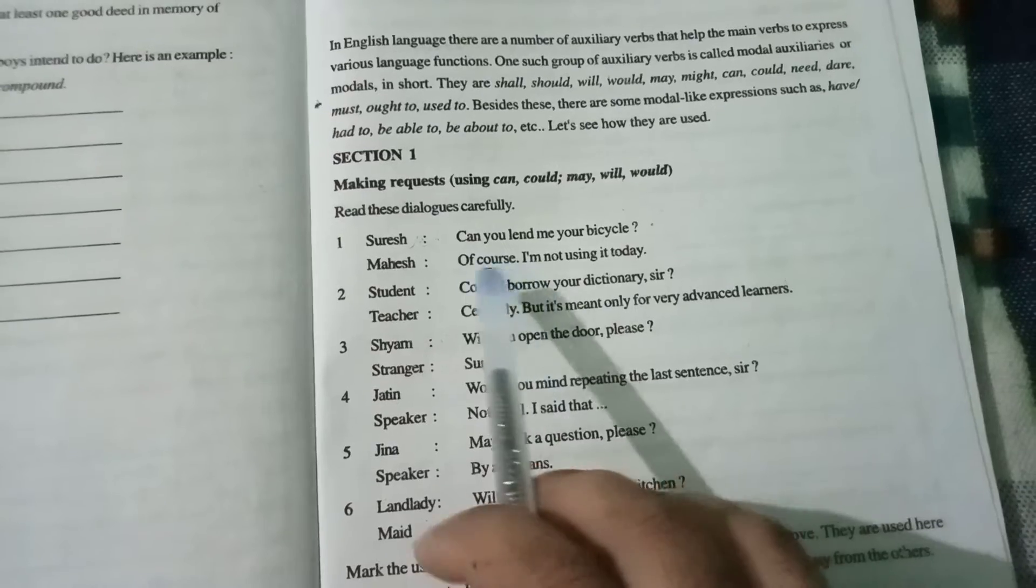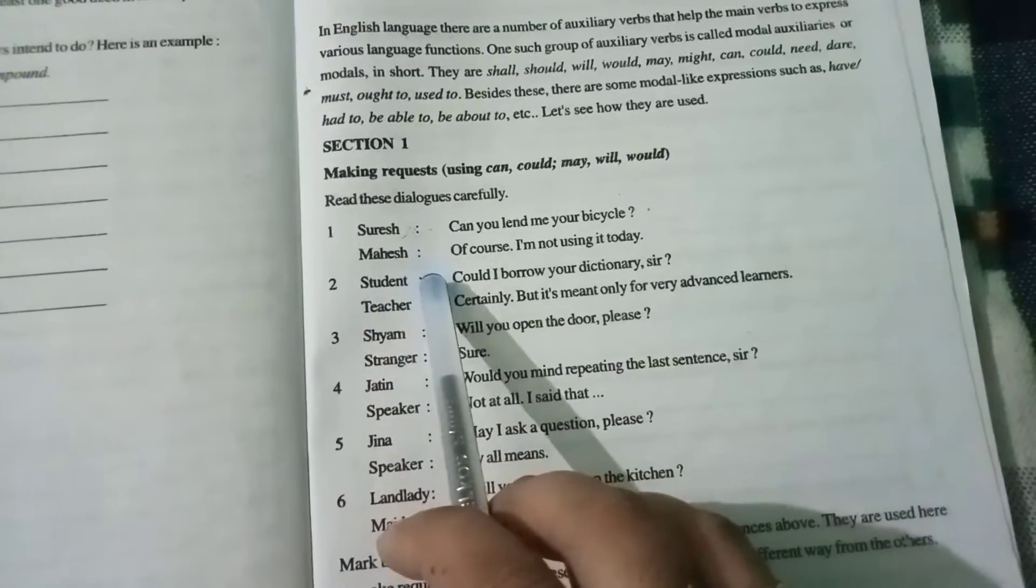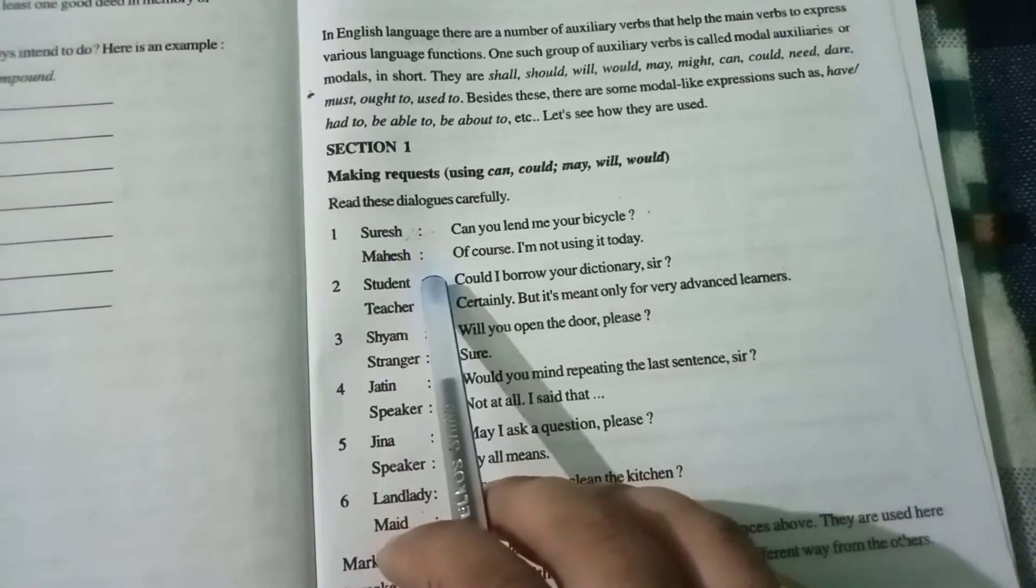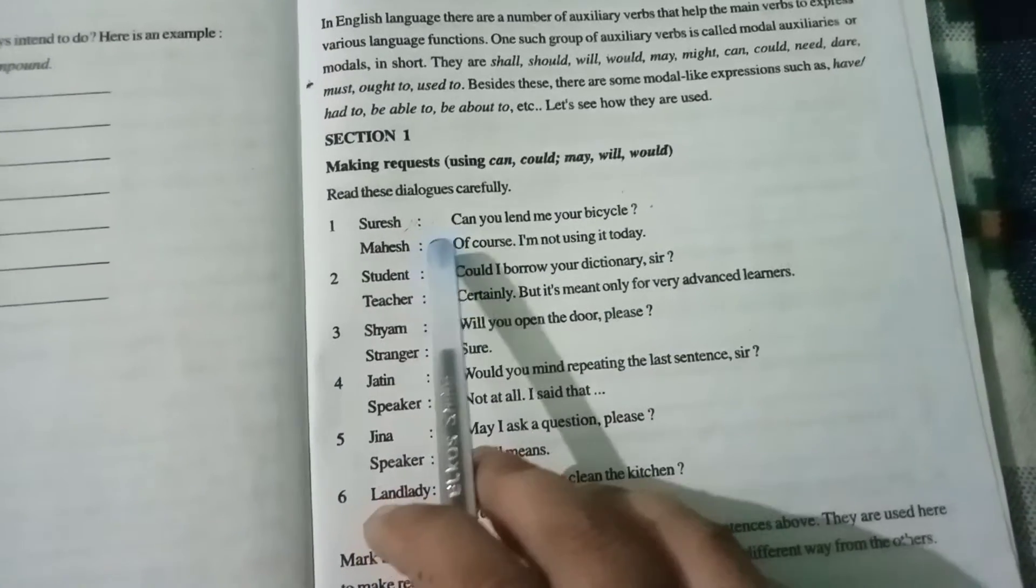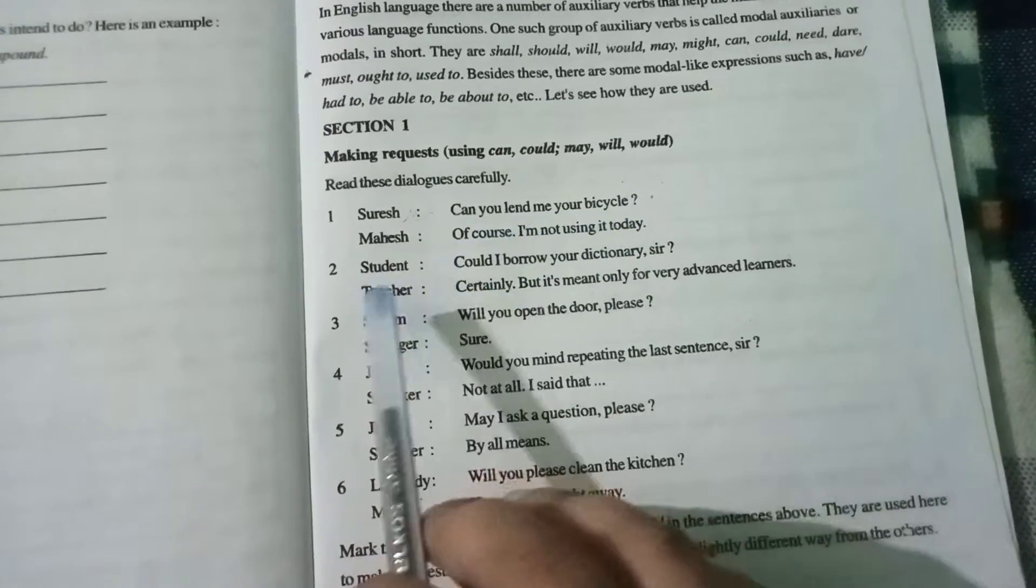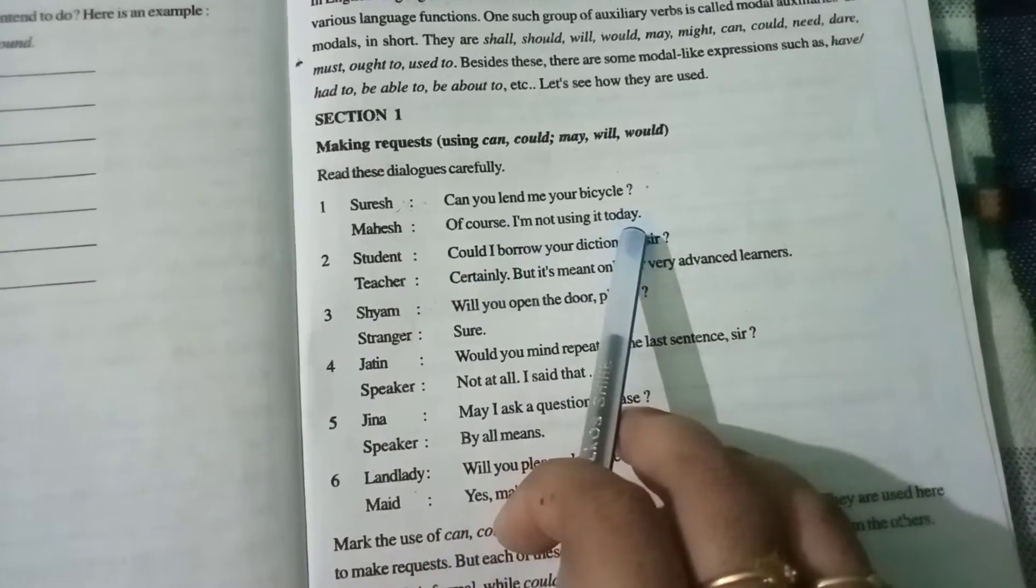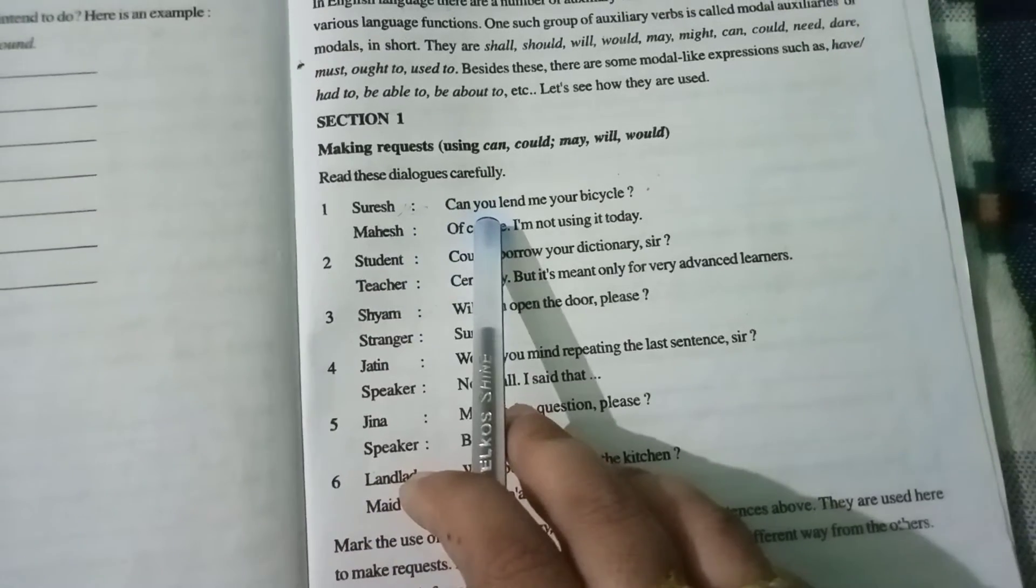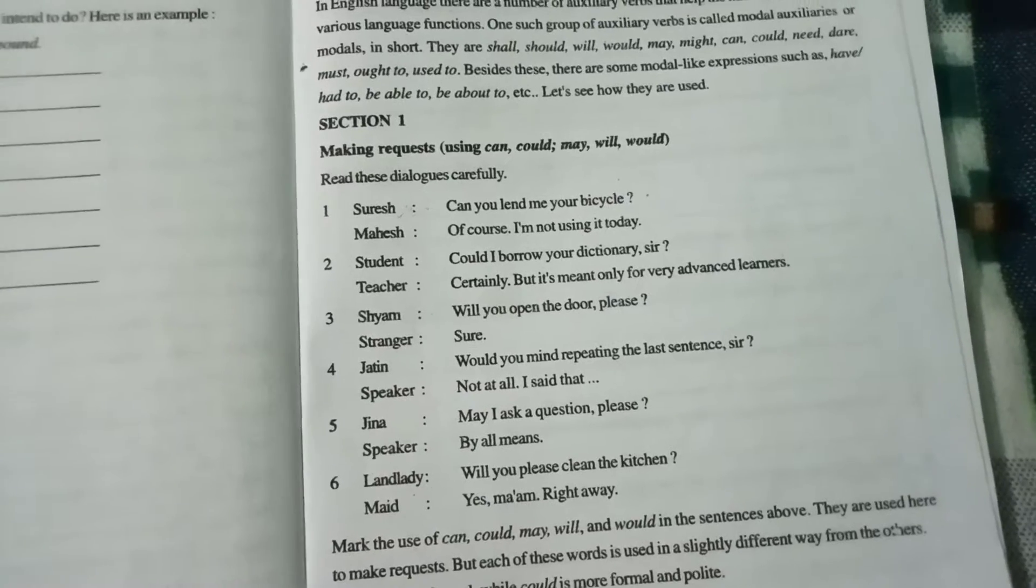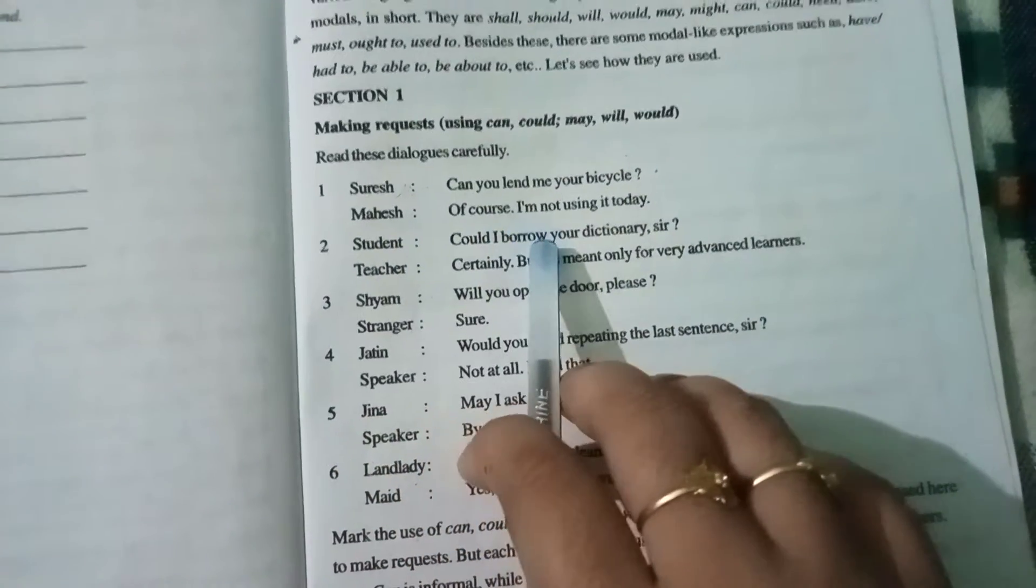Here you can get the discussion or conversation between two friends, Suresh and Mahesh, and Suresh requests Mahesh for his bicycle. So how does Suresh request? We will see here. Suresh: Can you lend me your bicycle? Mahesh: Of course, I am not using it today. So here you can see that Suresh is requesting Mahesh by using the modal can. So can you lend me your bicycle? Mahesh: Of course I am not using it today.